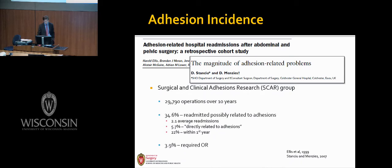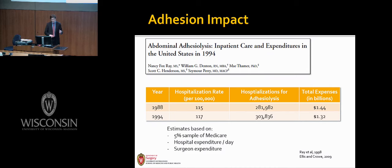The magnitude of the problem begins to take shape once you look at the monetary impact of adhesive disease. Ray and colleagues attempted to estimate the adhesion burden on a healthcare system, finding that over a billion dollars in expenses was due to adhesiolysis alone — 2.2 billion dollars in 2015 dollars. But it's likely an underestimation of the true impact, as it doesn't account for imaging costs, diagnostic costs, hospitalizations not resulting in obstruction, indirect costs such as lost productivity, or infertility treatments.